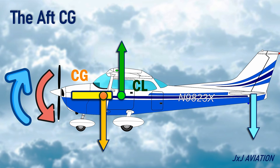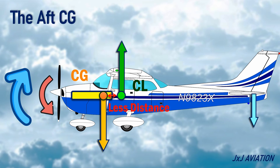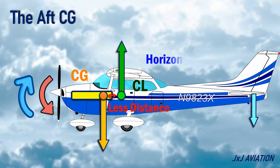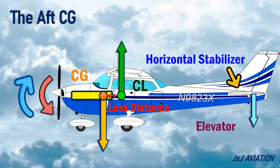Here, the distance between the CG and CL is less, so the nose-down moment that is created will be less. In this case, less downward force is needed from the tail section, which means less deflection of the horizontal stabilizer or elevator.